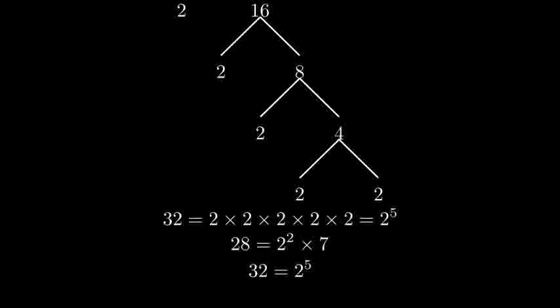Now that we have both prime factorizations, let's identify the common prime factors. We can see that 2 is the only common prime factor between 28 and 32. To find the GCF, we take the common prime factor 2 to the lowest power it appears in either number.